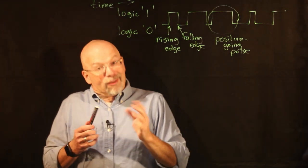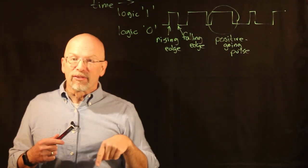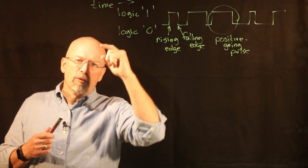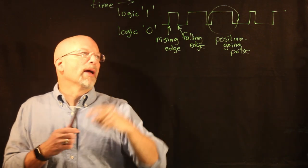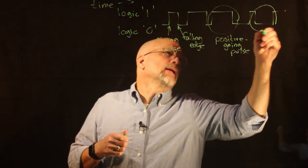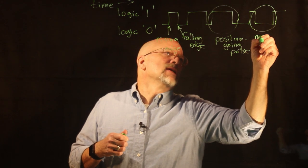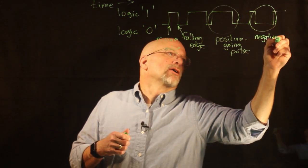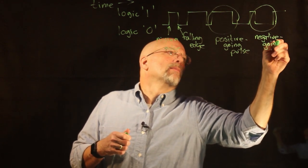Conversely, we have a negative going pulse, and that is whenever we go from a one to a zero and back to a one. We've got one of those right here—this guy is a negative going pulse.